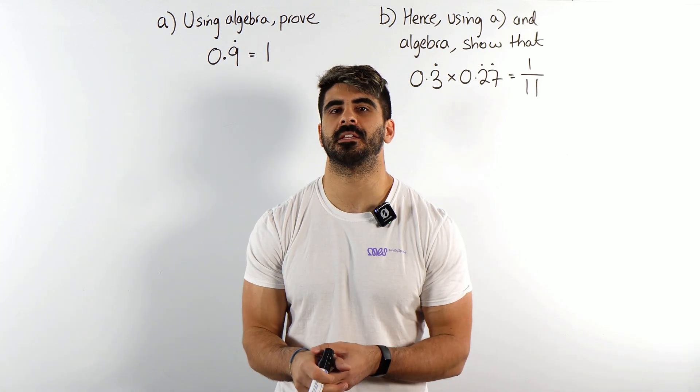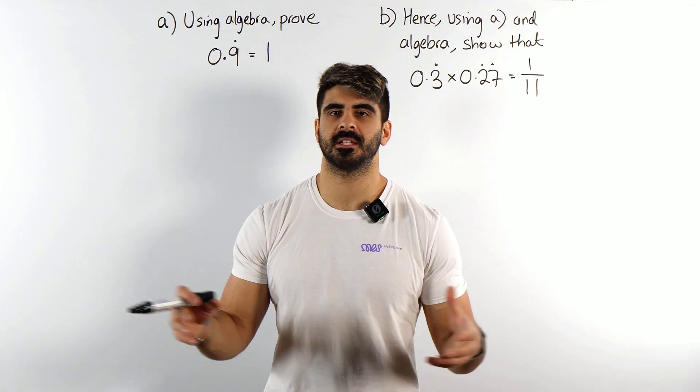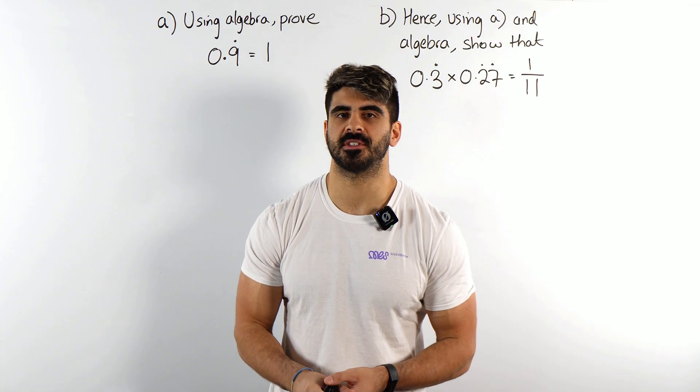Contrary to popular belief, 0.9 recurring is actually equal to 1. Let's prove it, part of our GCSE exam.